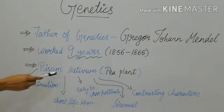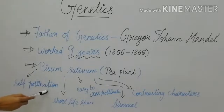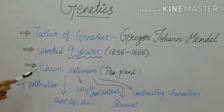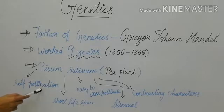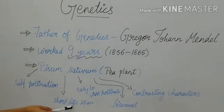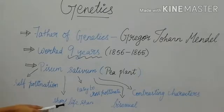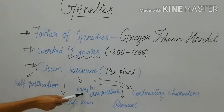He conducted his work for about 9 years using Pisum sativum plant, that is the pea plant. The reason for choosing this plant is that these plants are self-pollinating — pollen grains transfer to the same flower or another flower but within the same plant. Because of that, it was very easy to raise pure breeding individuals. This plant also has a short life span, that is annual — within a year the plant will germinate, grow, produce flowers, pods, seeds, and new plants — everything happens in one year.